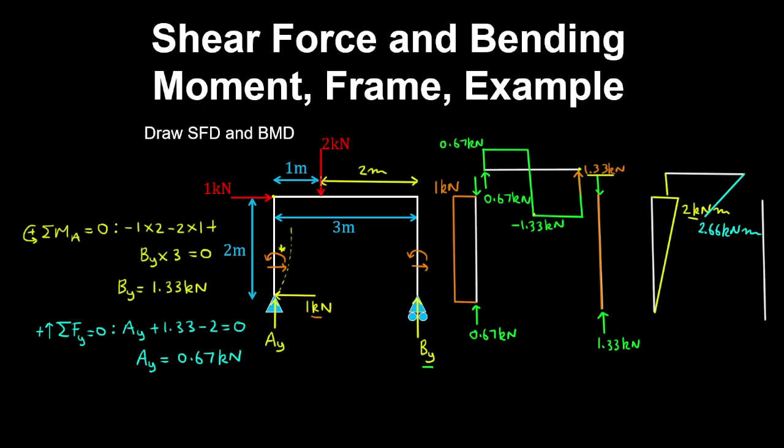And the bending moment diagram is piecewise linear in that beam because there's only a point load acting on it. And you can also observe that there's no horizontal reaction in the roller, so therefore the bending moment in that column is 0.